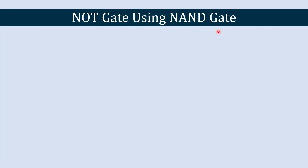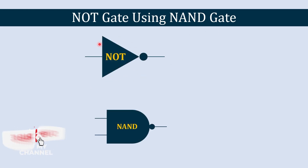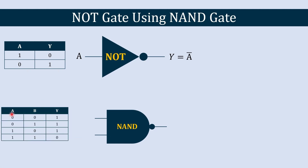We are starting with the NOT gate. Here we have a NOT gate and we are going to create it using a NAND gate. This is the truth table of the NOT gate — we have input A and the output is Y = Ā. If you give 1 as input the output will be 0, and if you give 0 the output will be 1. Now this is the truth table and equation of the NAND gate.